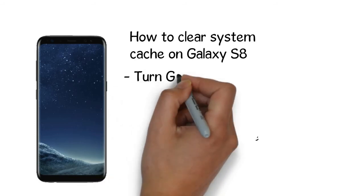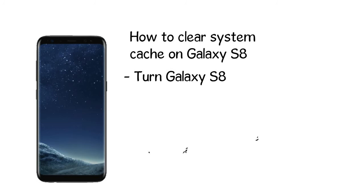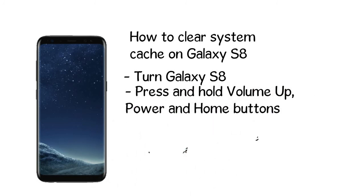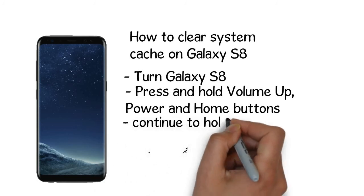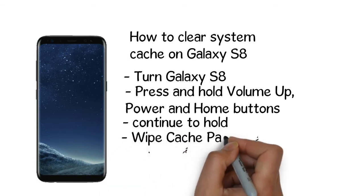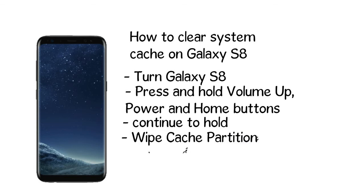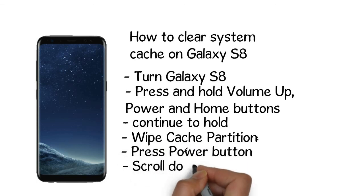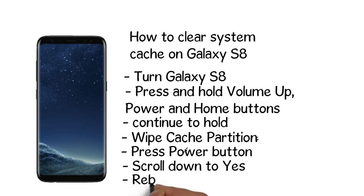How to clear the system cache on the Galaxy S8. Step 1: Turn the Galaxy S8 or Galaxy S8 Plus off. Step 2: Press and hold the volume up, power, and home buttons at the same time until the Android logo shows up and the phone vibrates. Step 3: Then let go of the power button and continue to hold the other buttons. Step 4: Use the volume buttons to scroll down to highlight wipe cache partition. Step 5: Press the power button. Step 6: Scroll down to yes and press the power button. Step 7: Scroll to reboot system now and press power.